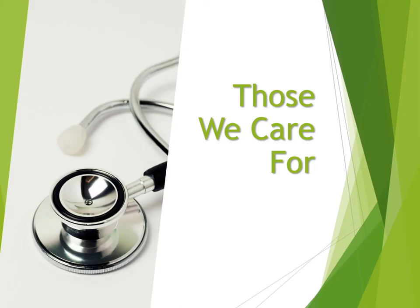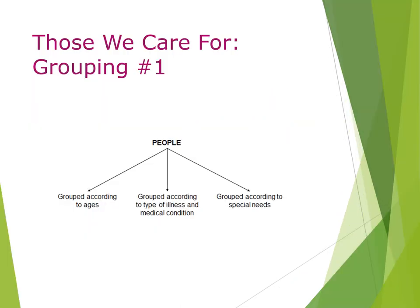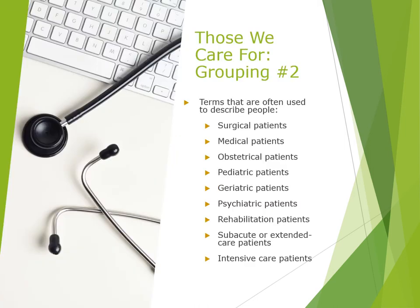Those we care for are sometimes grouped according to age, type of illness and medical condition, or special needs. Terms often used to describe people include: surgical, medical, obstetrical, pediatric, geriatric, psychiatric, rehabilitation, subacute or extended care patients, and intensive care patients.